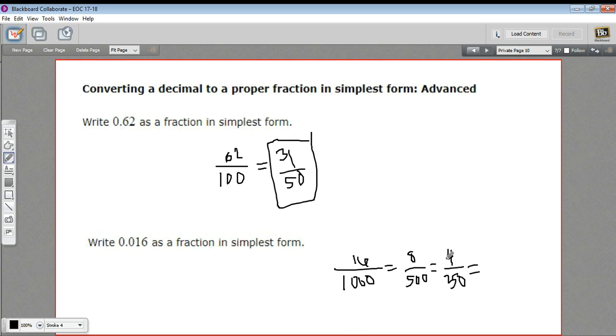Still both even. So I can divide both by two. Four divided by two is two. And 250 divided by two is 125. Aha! And finally, they're not still both even. And we only have a two on top. So this has got to be simplest form.